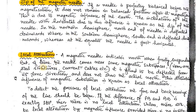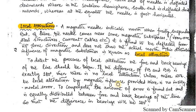So what is the influence of local attraction? If the difference between the fore bearing and back bearing is exactly 180 degrees, then there is no local attraction. But if the difference is not exactly 180 degrees, then you must understand that local attraction is present at that location.